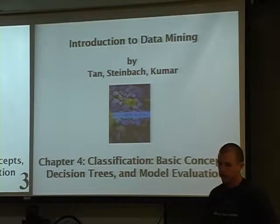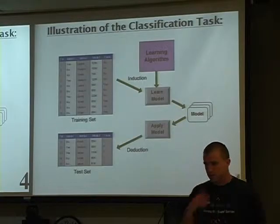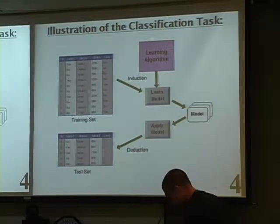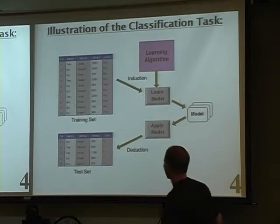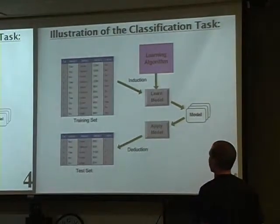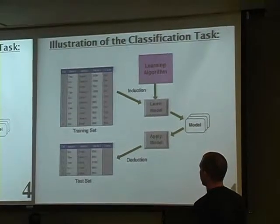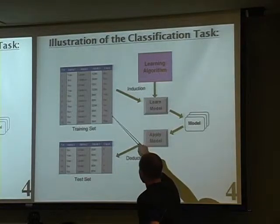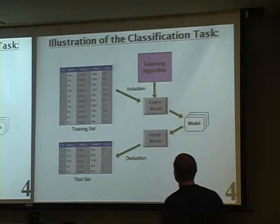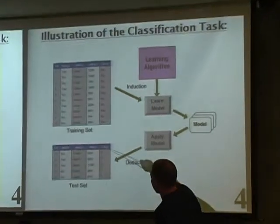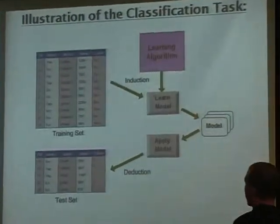The picture of the problem is: you have data with one attribute you care about — you want to predict that one attribute as a function of the others. That attribute is binary, making it a two-class problem. We're trying to predict a binary outcome here using in this case three attributes. We learn a model through the induction process, then apply it to new data to see how well we can predict the class correctly.